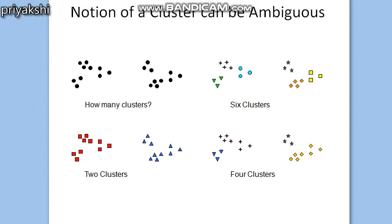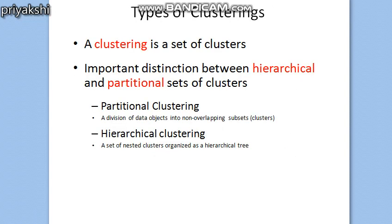Next we will see the types of clustering. The first types are partitional clustering and hierarchical clustering. Partitional clustering is the most commonly used clustering method today. A partitional clustering is a simple division of the set of data objects into non-overlapping subsets such that each data object is in exactly one class. In case of hierarchical clustering, it is a set of nested clusters organized as a hierarchical tree. If we permit clusters to have sub-clusters, we obtain a hierarchical clustering which is a set of nested clusters organized as a tree.